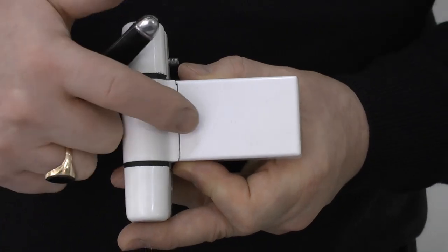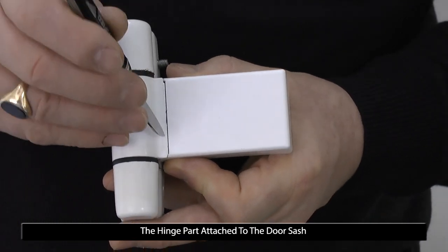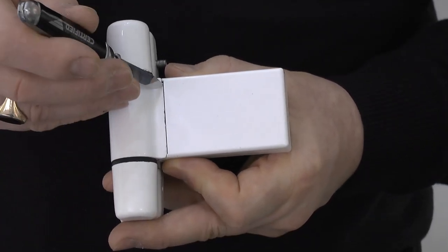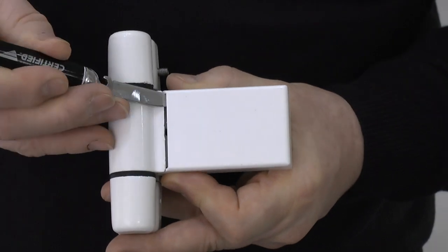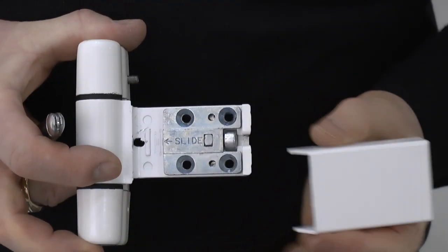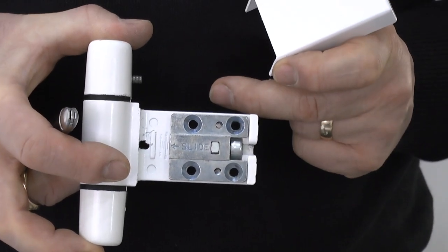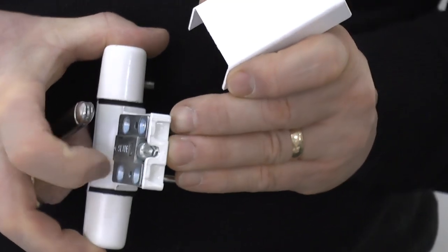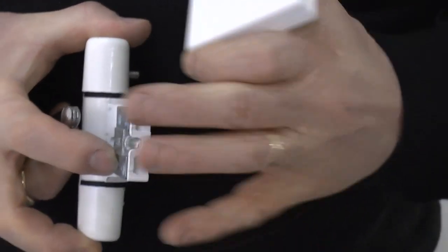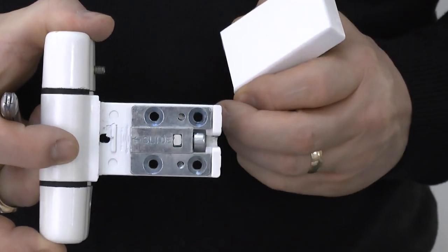To get the front plate off, we suggest either a scraper or a little pen knife. Either towards the bottom or towards the top, simply insert it and it will come away. That will reveal the plate behind that anchors through into the door which has pins that have to be removed first.